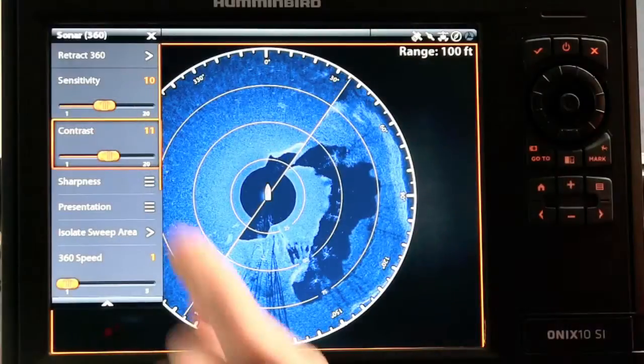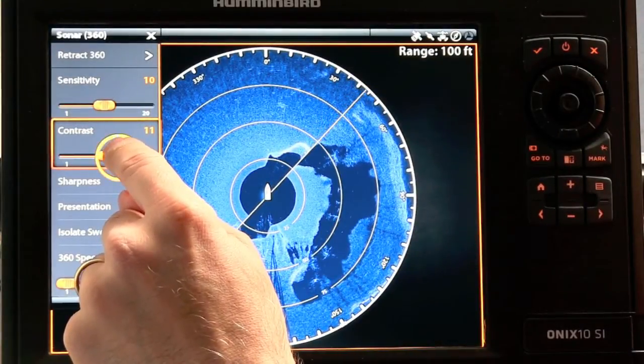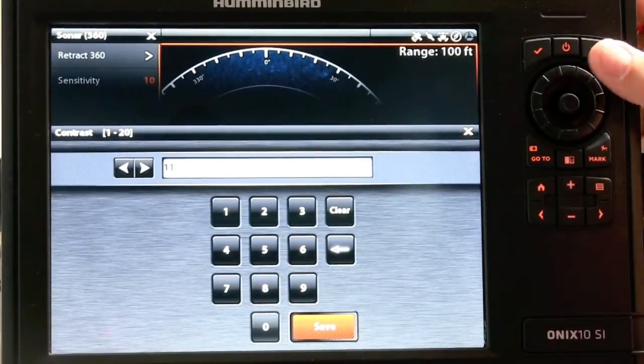Simply touch one of these settings to select it and then adjust its value either by turning the control wheel or by pressing the slider and typing in the desired value.